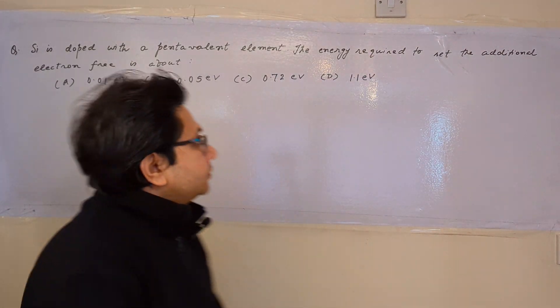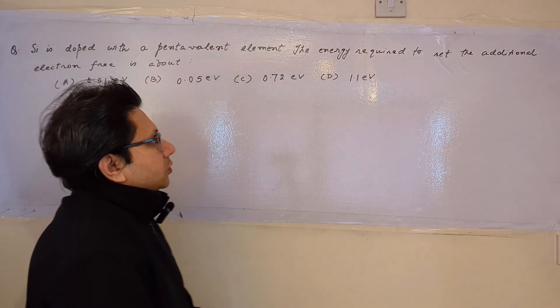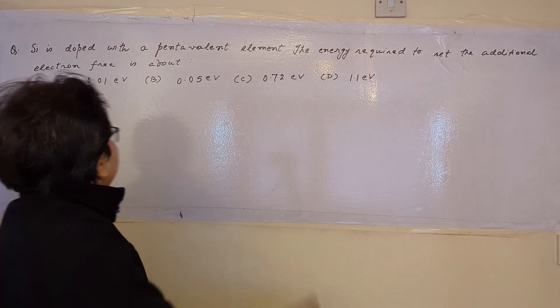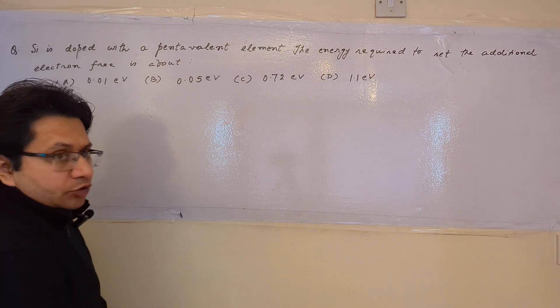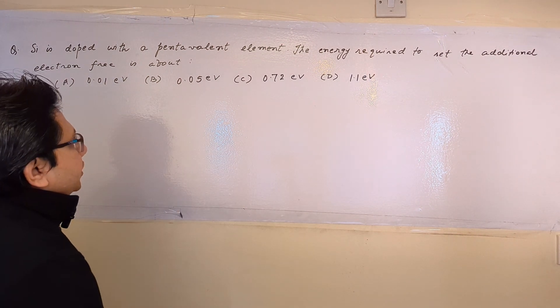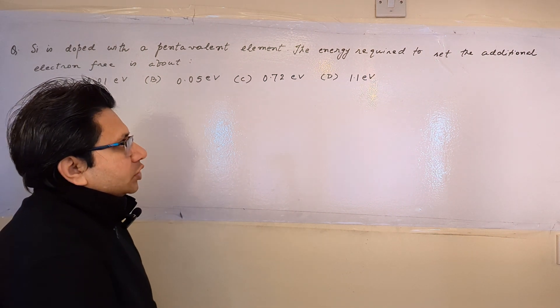Hello students, the question is: silicon is doped with a pentavalent element. The energy required to set the additional electron free is about: option A, 0.01 electron volts; option B, 0.05 electron volts; option C, 0.72 electron volts; and option D, 1.1 electron volts.